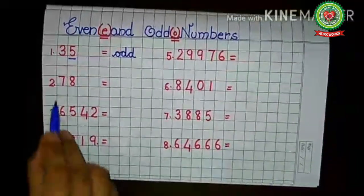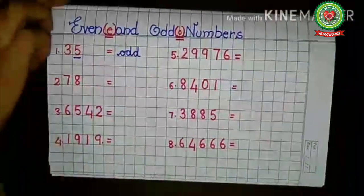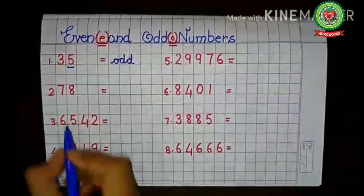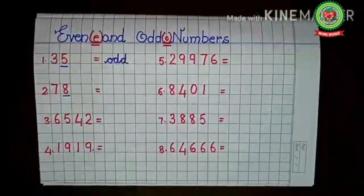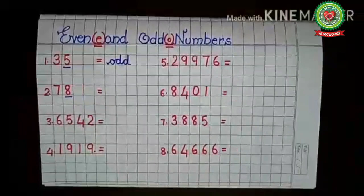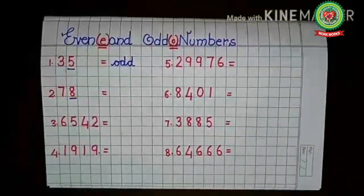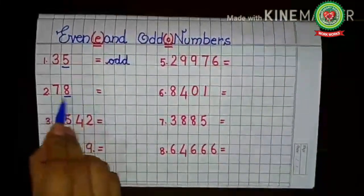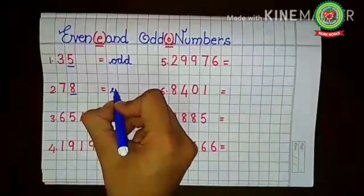Next number is 78. We underline the last digit and check the table of two: two, four, six, eight. Eight comes in the table of two, so 78 is an even number.